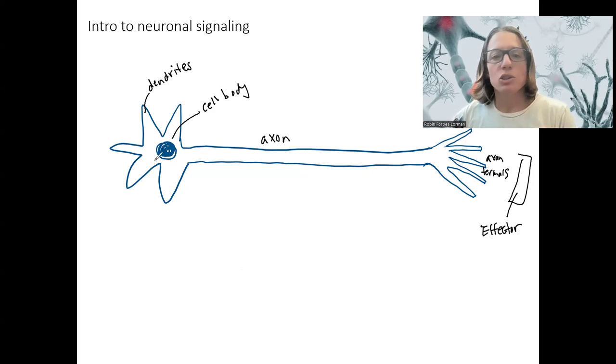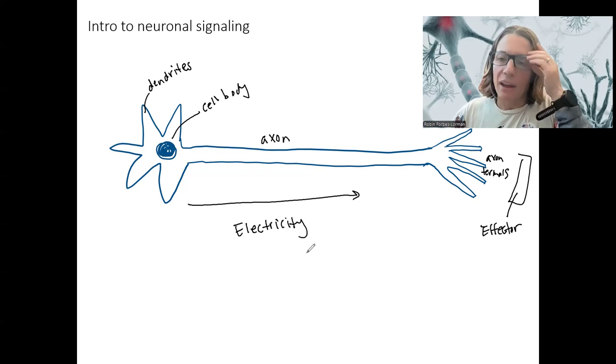So our goal is to generate and then transmit an electrical signal down this axon. What is electricity? It's the same thing it is in the wiring of your house. However, most people don't really understand that well either. So what electricity is, is the movement of ions.